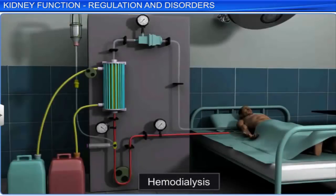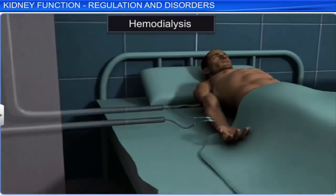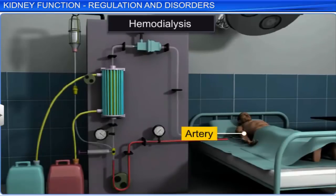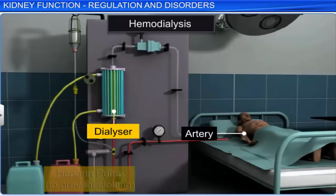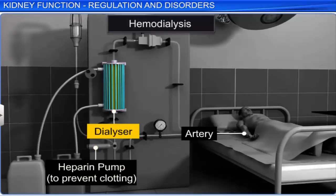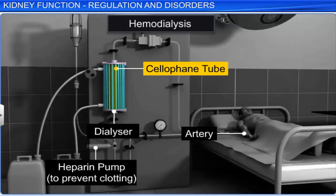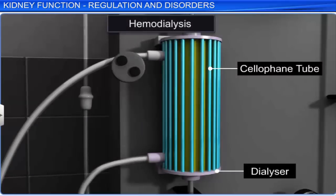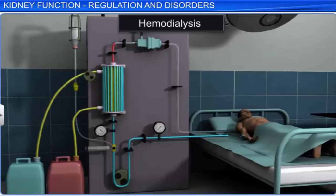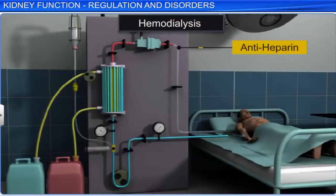The life-saving process for uremic patients is hemodialysis, wherein excess urea in the blood is removed. In this process, blood from a convenient artery is drained into a dialyzing unit after adding an anticoagulant like heparin. In the dialyzer, a coiled cellophane tube surrounded by a dialyzing fluid with a composition similar to plasma, except for the nitrogenous waste, is placed. The membrane of the cellophane tube is porous and allows molecules to pass through it based on the concentration gradient. The absence of nitrogenous wastes in the dialyzing fluid helps urea to easily move out, thereby clearing the blood. Anti-heparin is added to this cleared blood, and it is pumped back into the body through a vein.